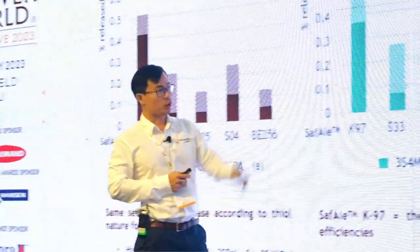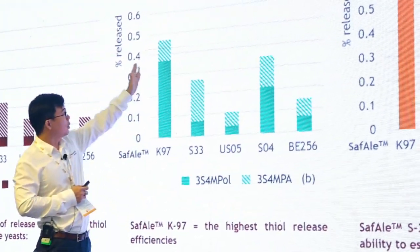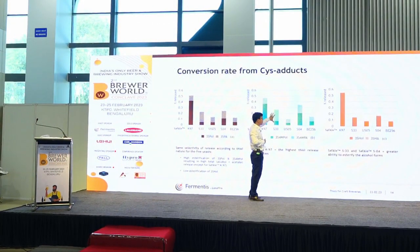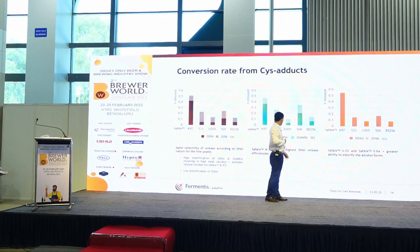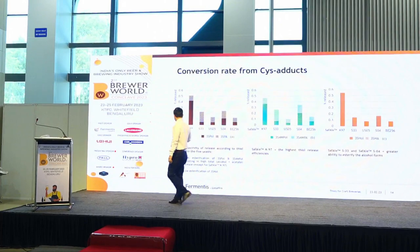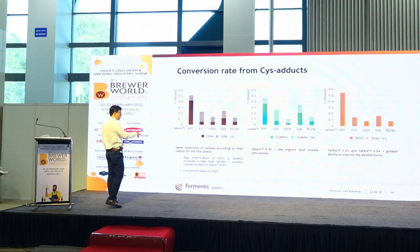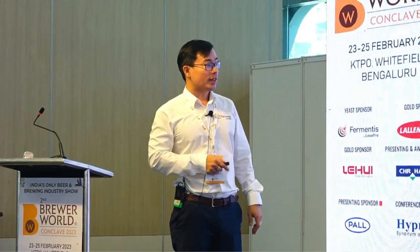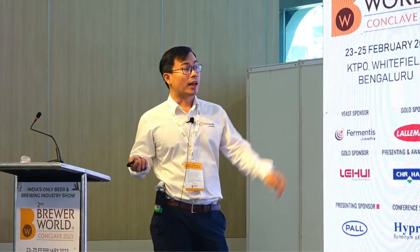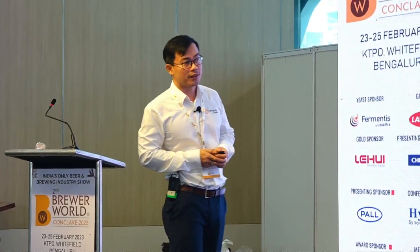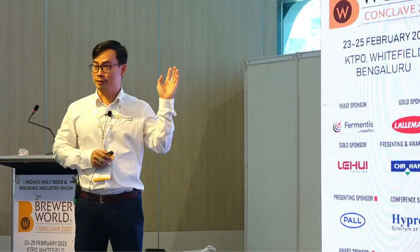The same pattern repeats for the second and third thiol types. K97 remains very strong in releasing, and S33 is the king of esterification. SO4 also shows strong esterification. The conclusion in red: the same selectivity of release according to the thiol nature is seen across all five yeasts. SafAle K-97 shows the highest thiol release overall, while S33 and SO4 demonstrate a greater ability for S-acetylation to the acetate form.